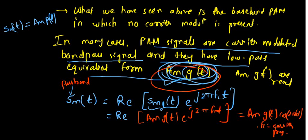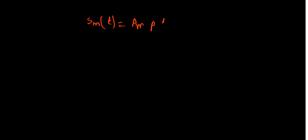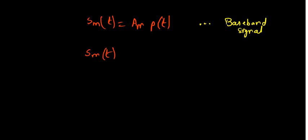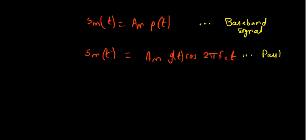Now let's calculate the energy of the passband signal. The energy E_m = A_m² times the integral of [g(t) · cos(2πf_c t)]² dt. If g(t) has energy E_g, then g(t)·cos(2πf_c t) has energy E_g/2. This is because cos²(2πf_c t) = [1 + cos(4πf_c t)]/2, and the cosine term integrates to zero over one period, leaving the factor of 1/2. So E_m = A_m² · E_g/2.